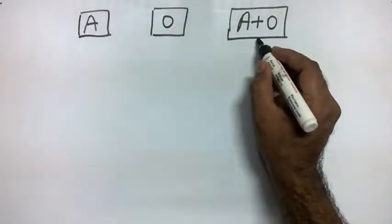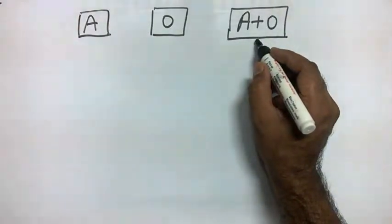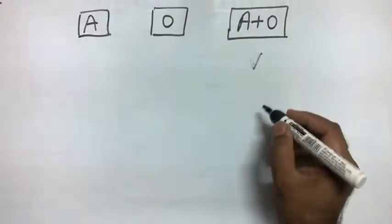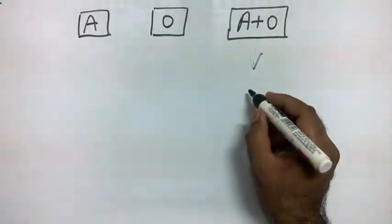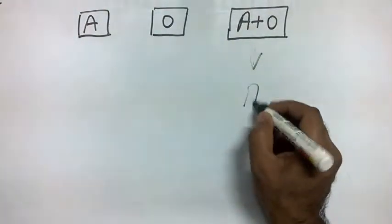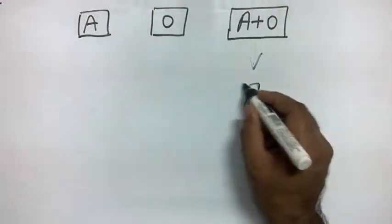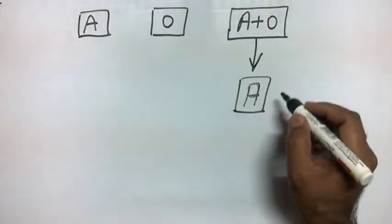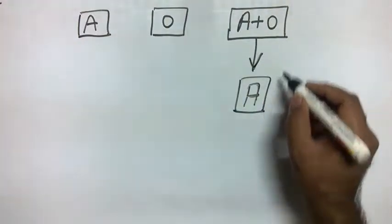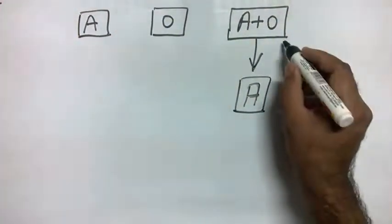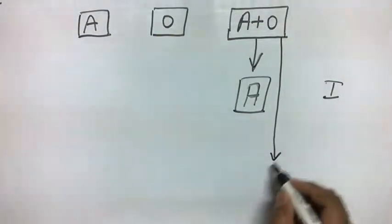We start from the A plus O box and pick a fruit. Suppose it is apple - it can be apple or it can be orange. So one case is it is apple, another case is it can be orange.